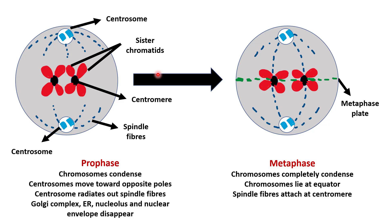The next phase is Metaphase. Here chromosomes completely condense and are observed clearly under the microscope. Chromosomes lie at the equator, and the plane of alignment of chromosomes is called the metaphase plate. Spindle fibers attach to the centromere.